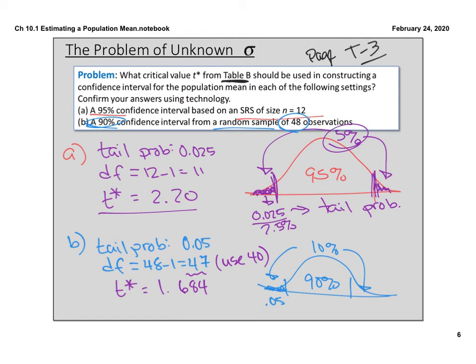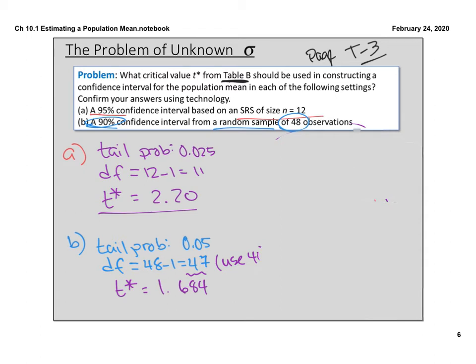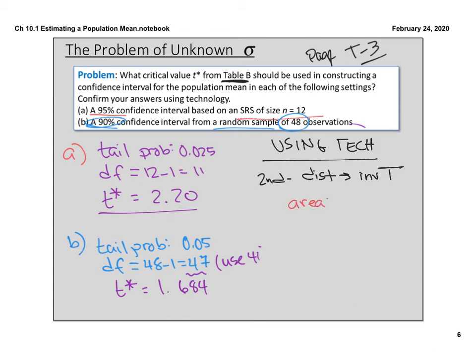We also have a way to find the t* value using technology — the TI-84 calculator. Go to second, then distribution, and use inverse T. If you have the stat wizard, it will give you fields to fill in: area, which is your tail probability, and degrees of freedom, which is n minus 1. For part B, I fill in tail probability 0.05 and degrees of freedom 47. Using the calculator gives a more accurate t* value.